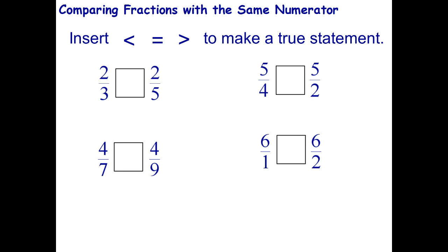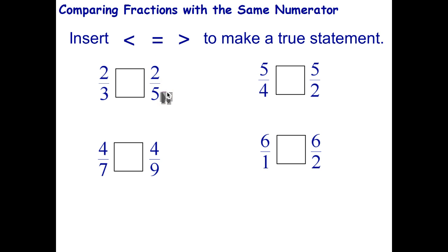Let's have a look at the next scenario. This time, the numerators are equal, so what we have to do is look at the denominators. The question is: if you're going to get two slices of pizza, would you prefer to get a third of a pizza or a fifth of a pizza for each slice? If you're chopping a pizza up into thirds, you're going to get more pizza than if you chop a pizza up into fifths. So two-thirds of a pizza is more than two-fifths because the pieces are bigger.